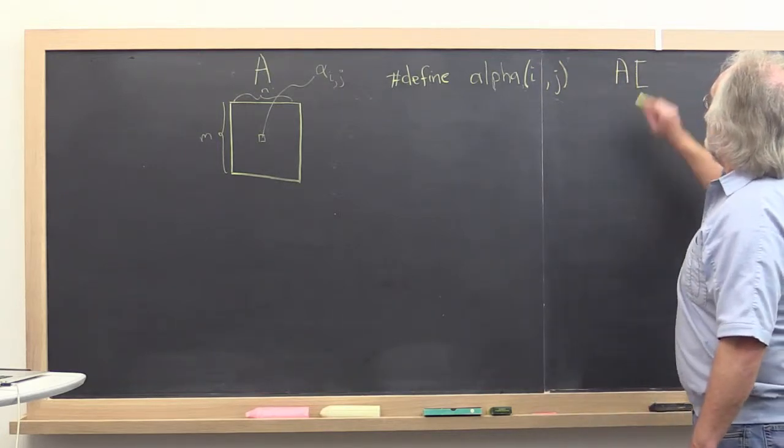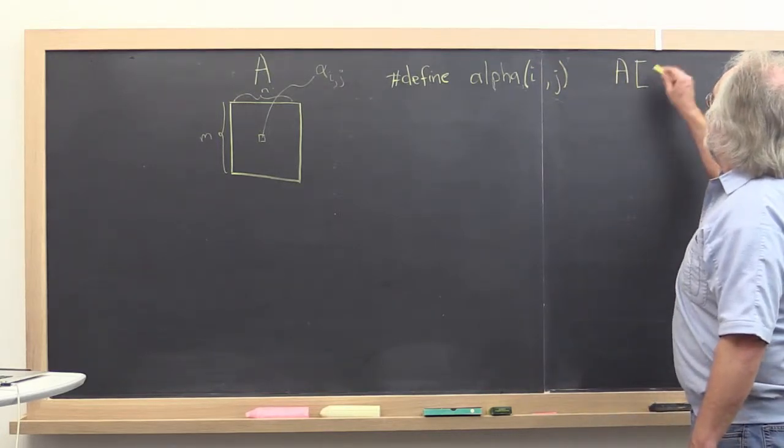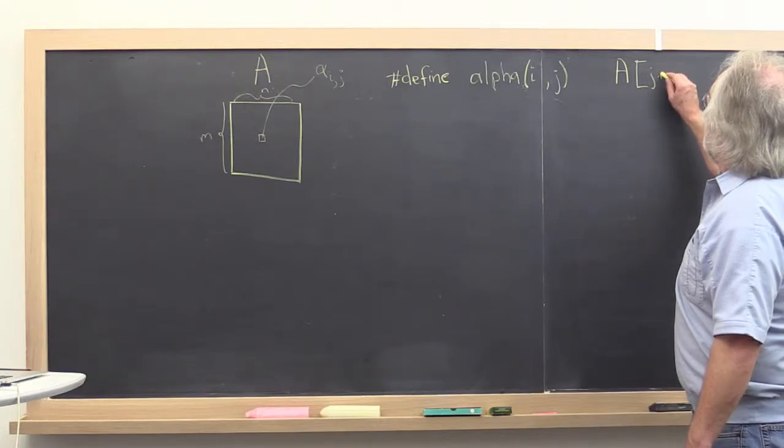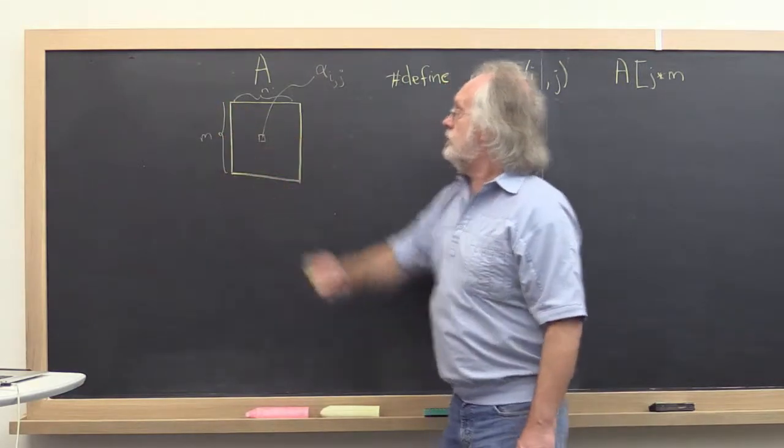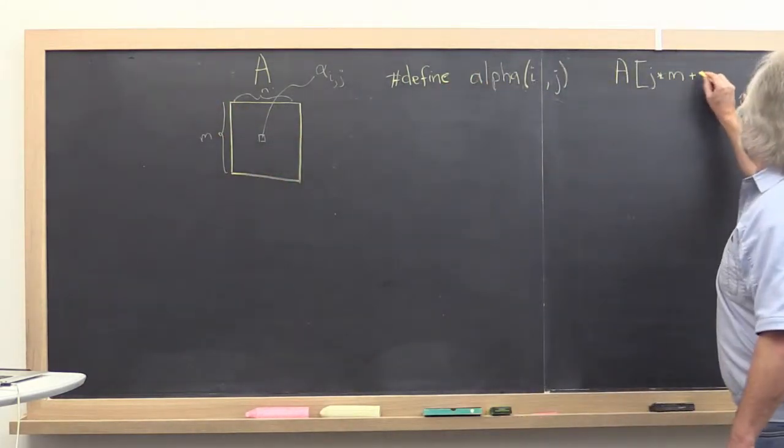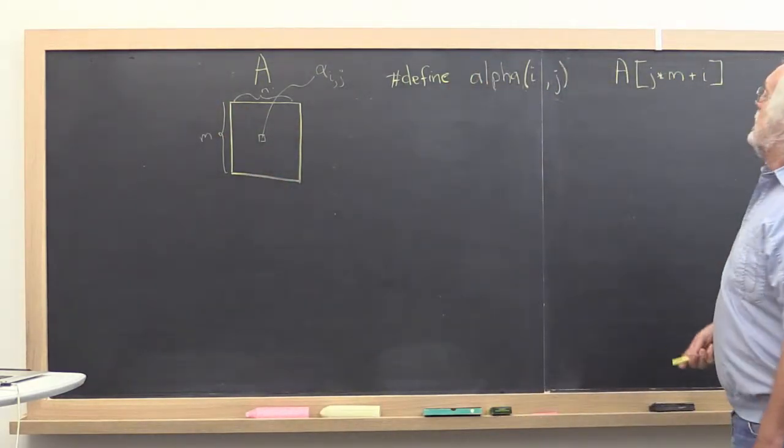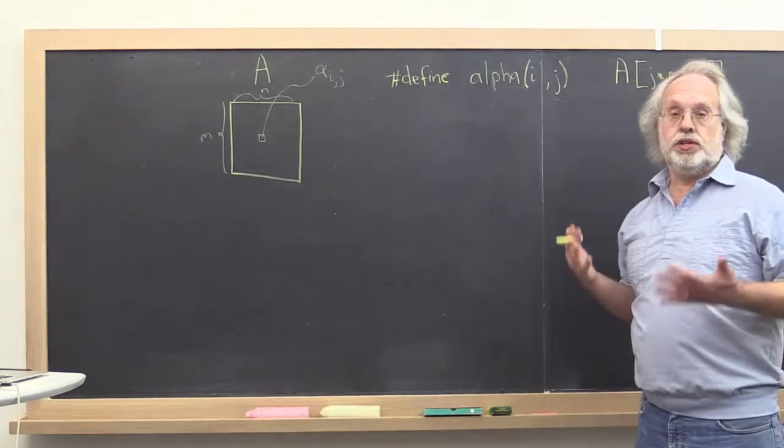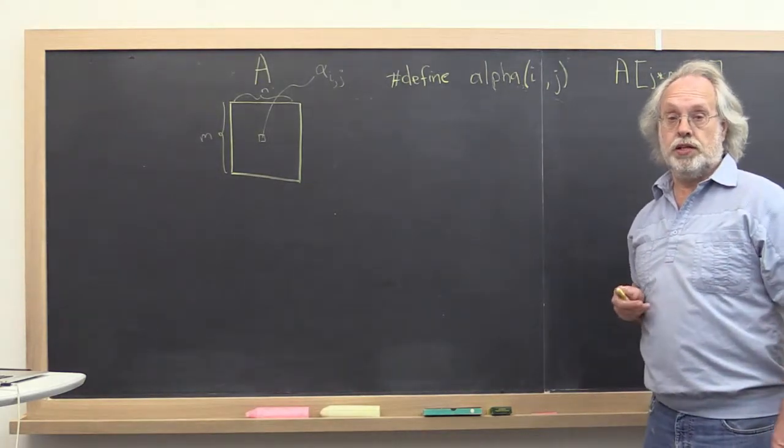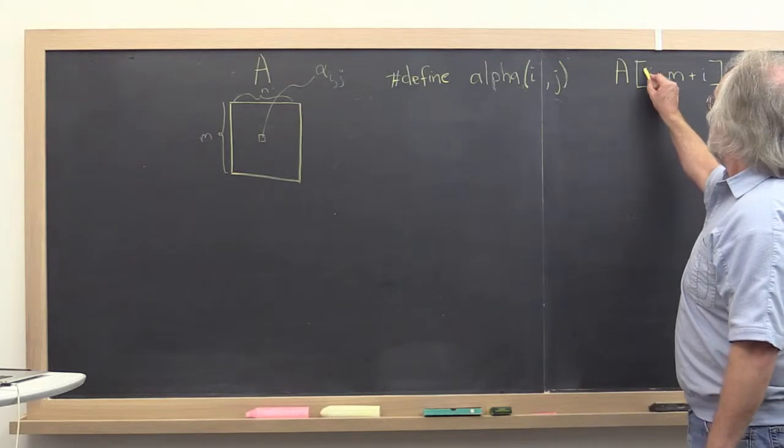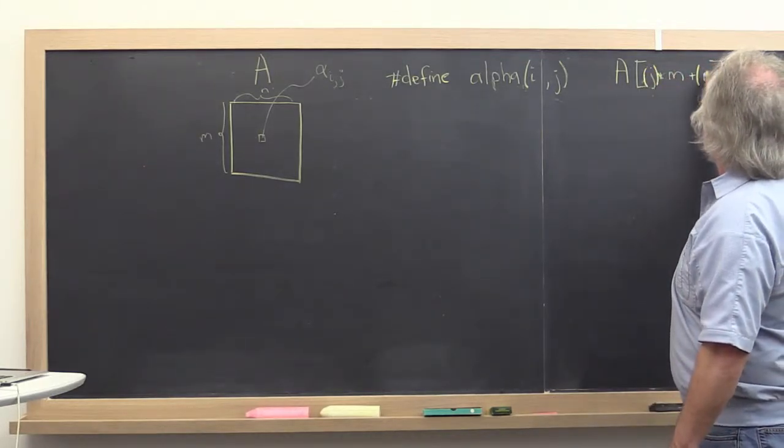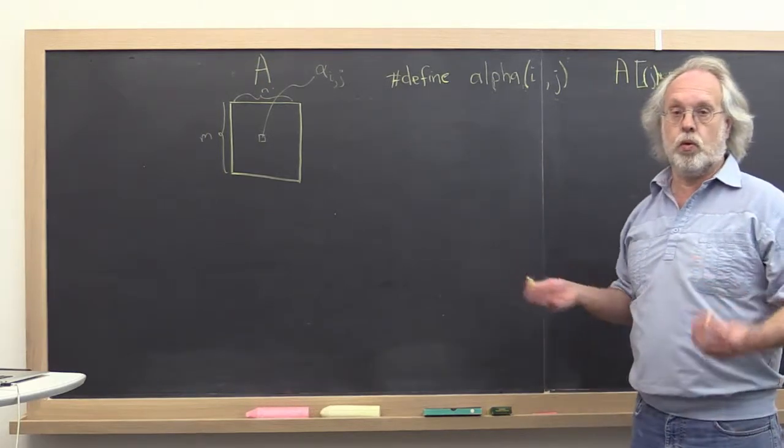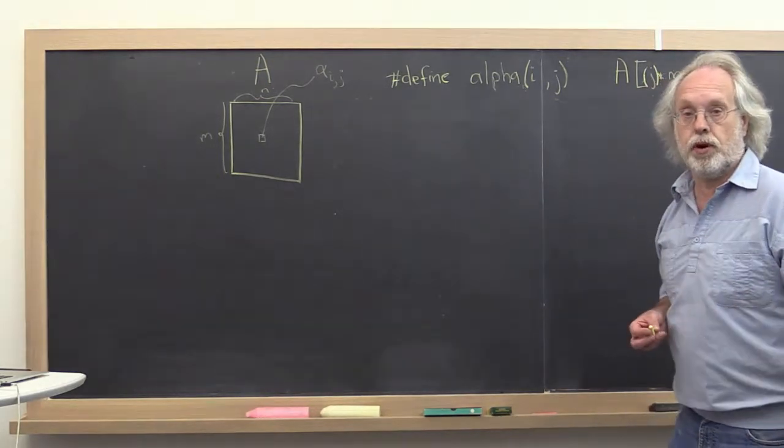then we indexed into j times M, the row size of the matrix, plus i. That's how we do it in column-major order. I always like to put parentheses around the i and j because you never quite know how this expands and whether order of computation is obeyed properly.